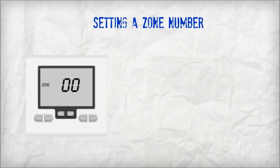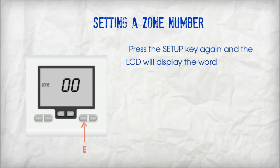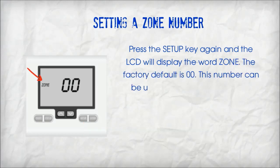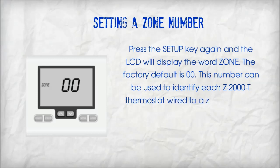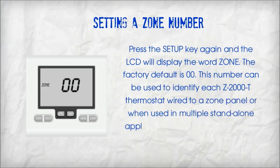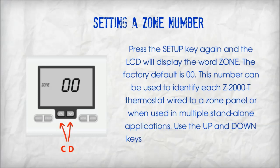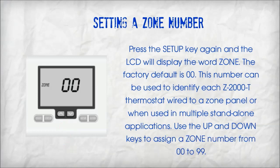Setting a zone number. Press the setup key again and the LCD will display the word 'zone'. The factory default is 00. This number can be used to identify each Z2000T thermostat wired to a zone panel or when used in multiple stand-alone applications. Use the up and down keys to assign a zone number from 00 to 99.